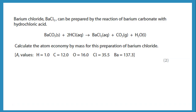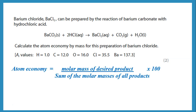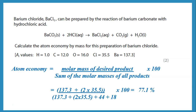Barium chloride can be prepared by the reaction of barium carbonate with hydrochloric acid. Calculate the atom economy of barium chloride. Barium chloride is the desired product. Atom economy is the MR of the desired product over the sum of the MRs of all products times 100. So that's the MR of barium chloride (barium plus 2 chlorines) over the MR of barium chloride plus the MR of CO2 plus the MR of water, times 100.